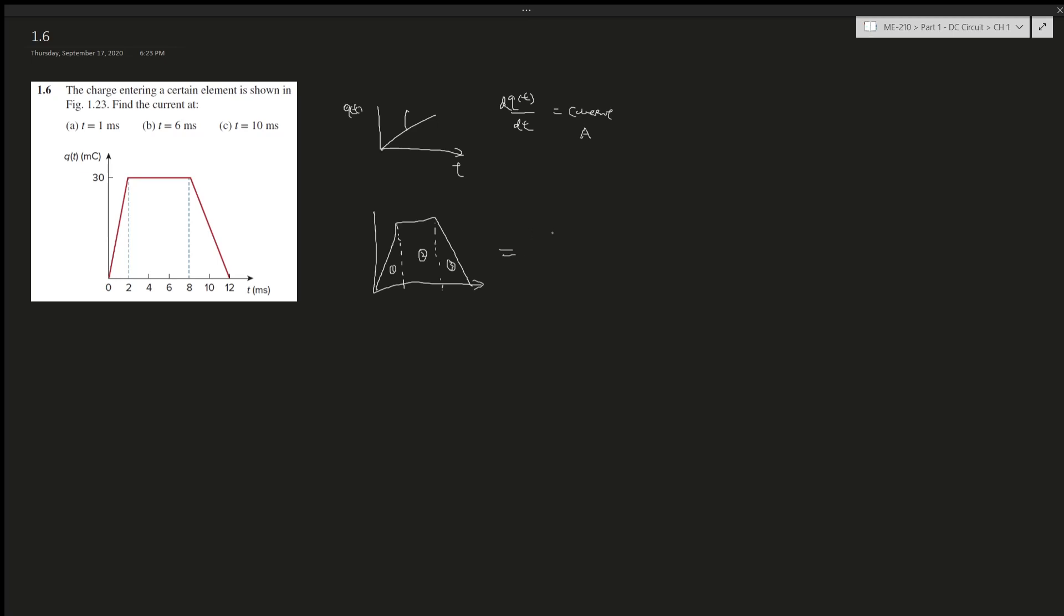which is rise over run, so 30 over 2, which is 15. That is the slope, which is going to give you amperes. This is between zero and two milliseconds. One millisecond is between one and two, so since one is between one and two, and 15 is the answer from any point between zero and two, it is 15 amperes for part a.